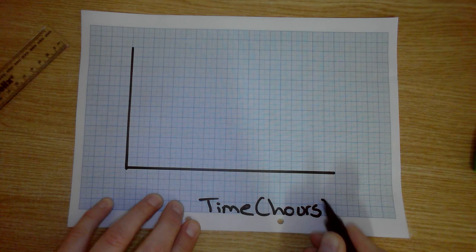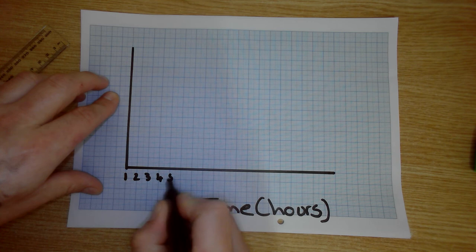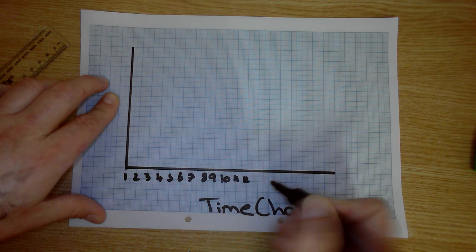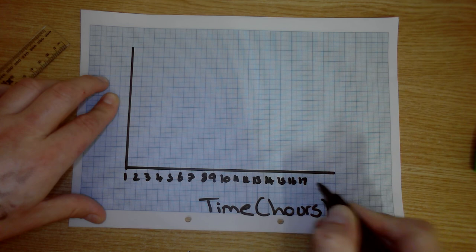So, I don't know, 1 o'clock, 2 o'clock, 3 o'clock, 4 o'clock, 5 o'clock, 6, 7, 8, 9, 10, 11, 12, 13, 14, 15, 16, 17, 18, 19, 20. Okay, so that's time along the bottom.